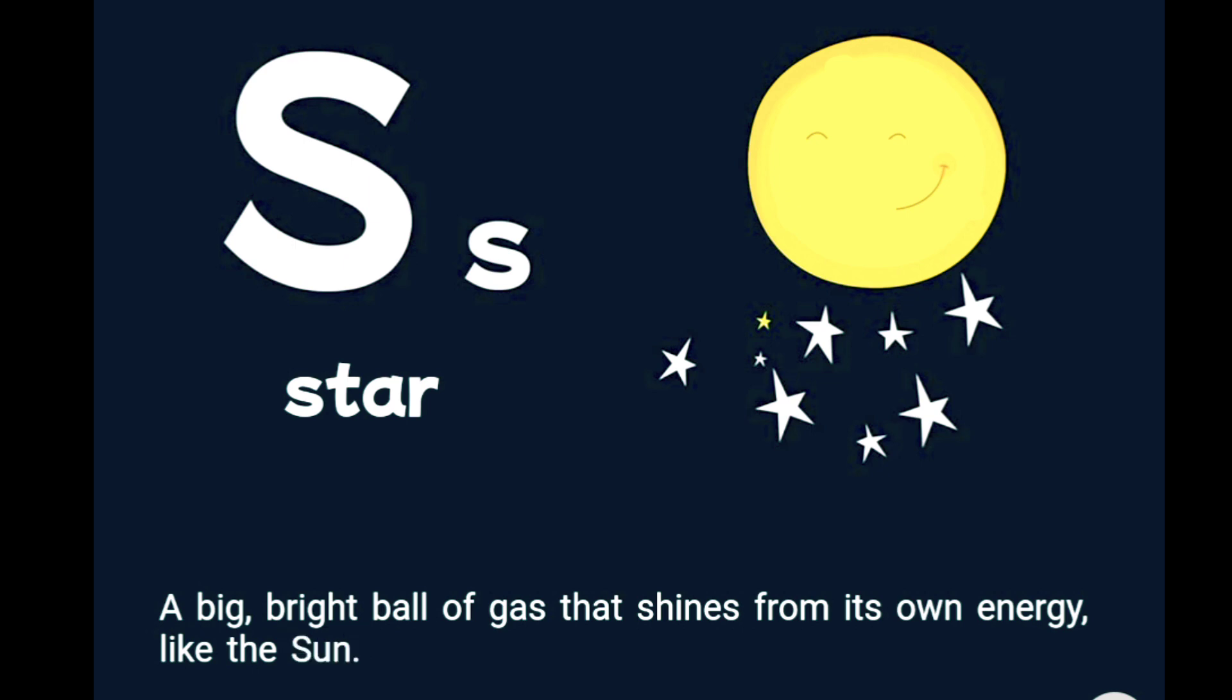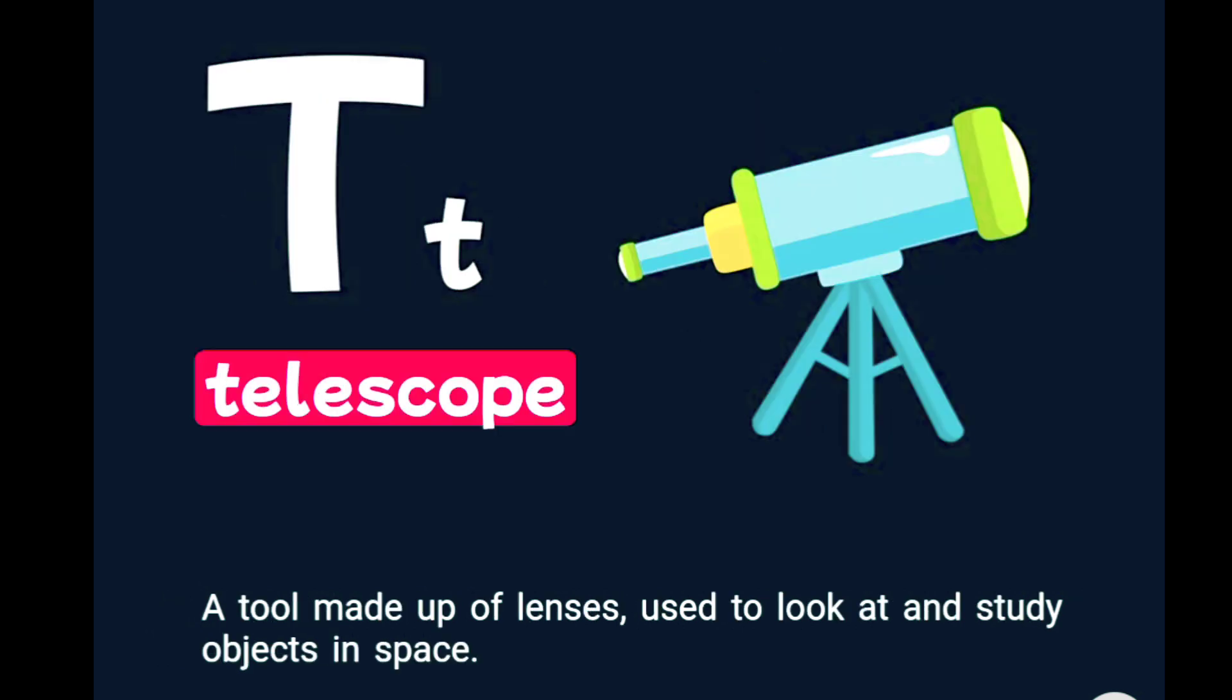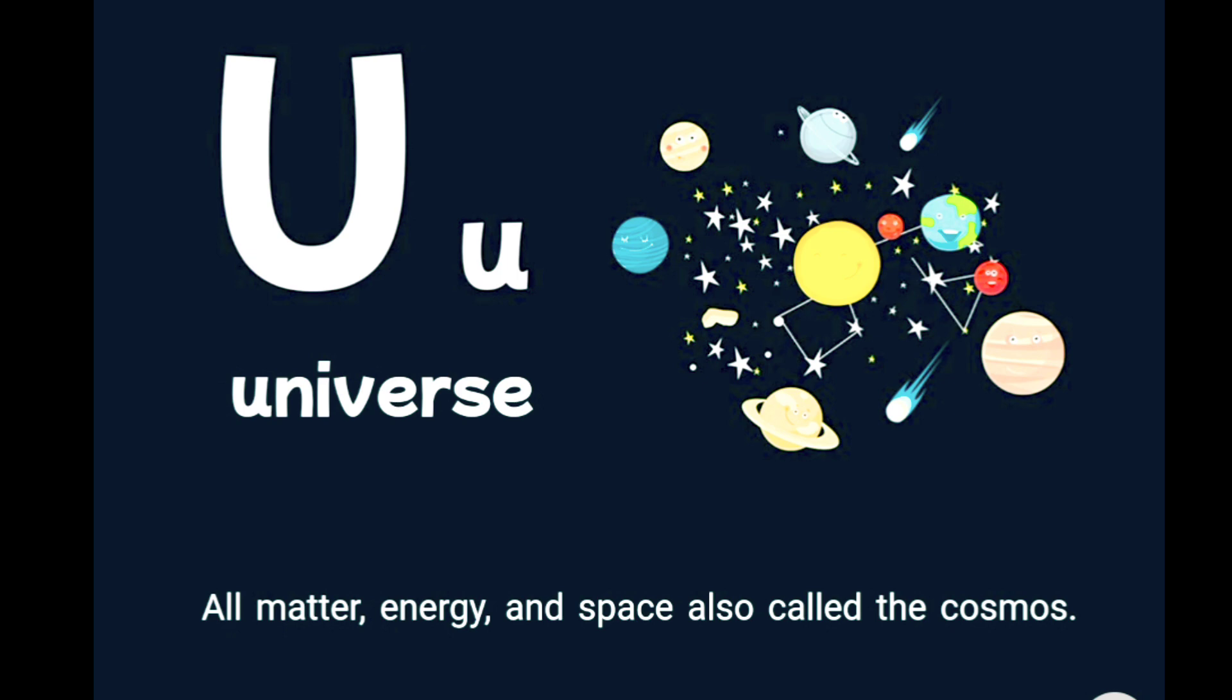T is for telescope, a tool made up of lenses, used to look at and study objects in space. U is for universe, all matter, energy, and space, also called the cosmos.